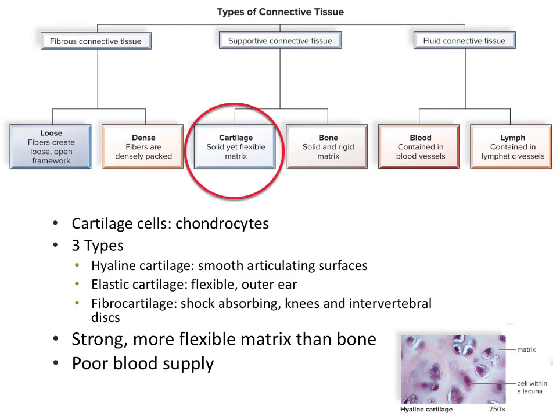Our next type of connective tissue is cartilage, and there are three main types. We have hyaline cartilage, which is smooth — you would find it at the tip of the nose or between articulating bones in your joints. We also have elastic cartilage, which has a lot of elastic fibers, which is why if you pull the outside of your ear down and let it go, it will just flap back into place. We also have fibrocartilage, found between the intervertebral discs and in your knees, whose function is to absorb shock. This has a somewhat poor blood supply as well.